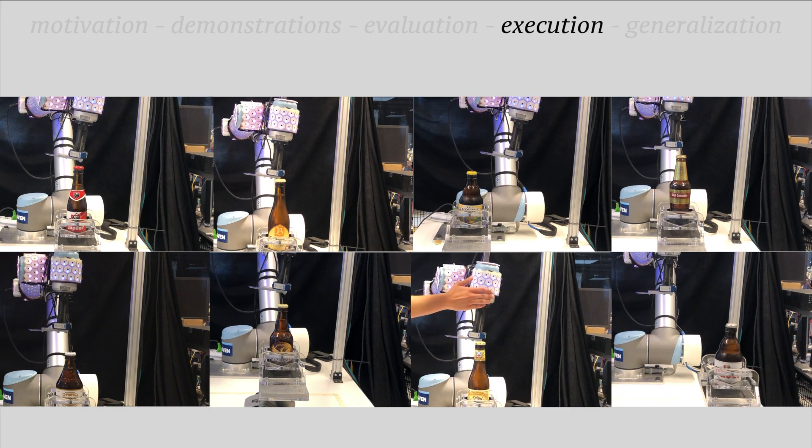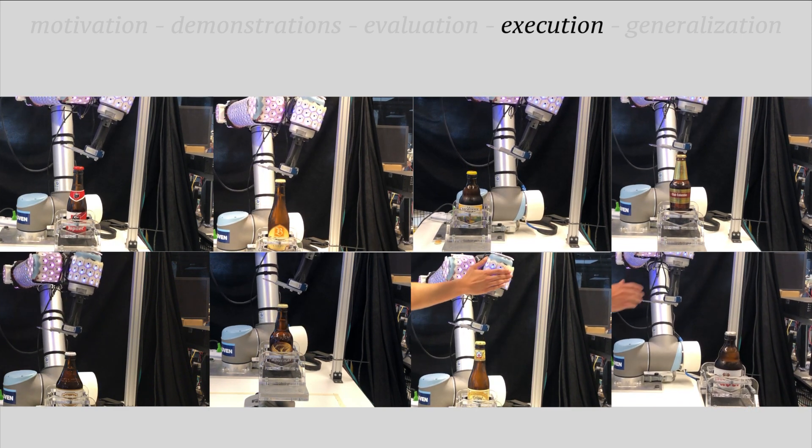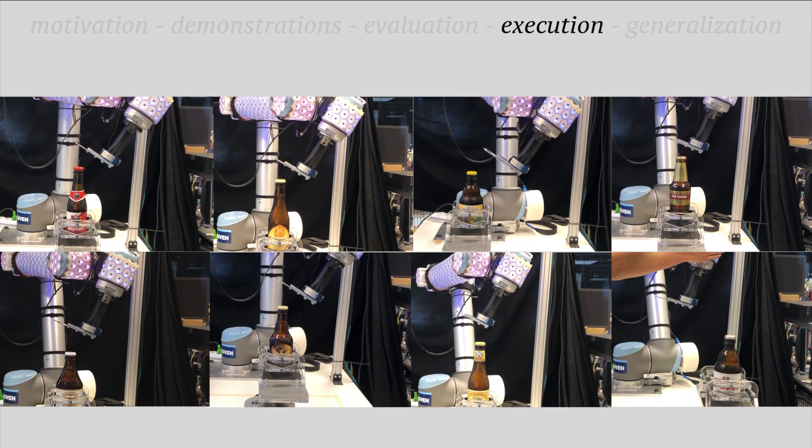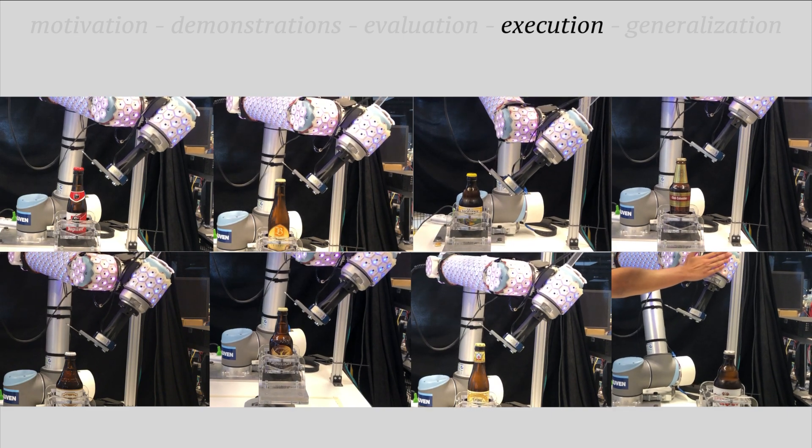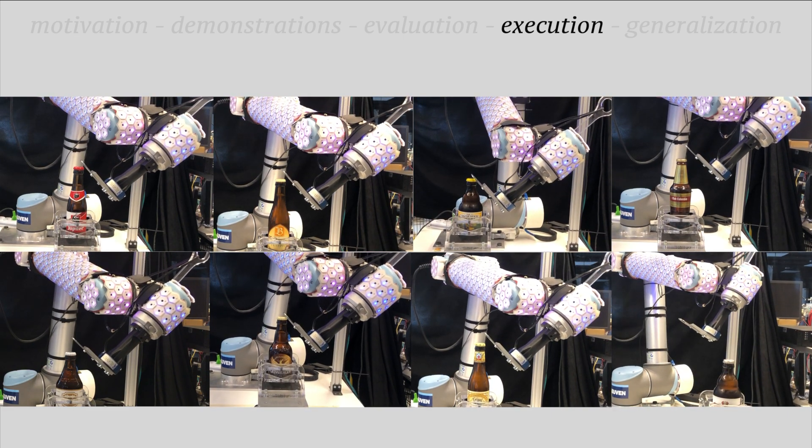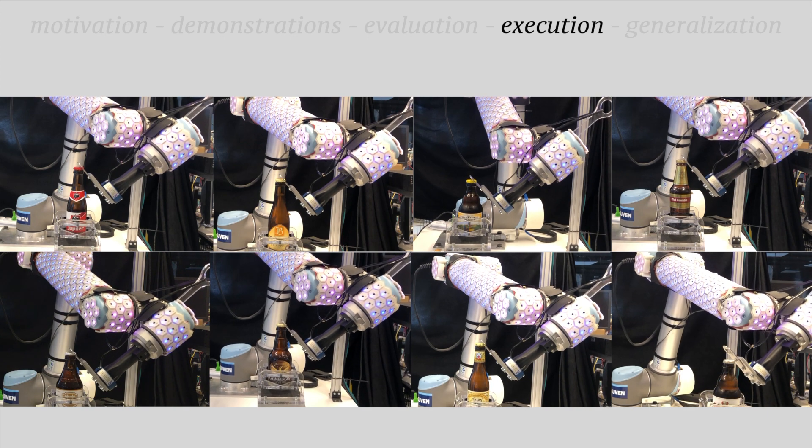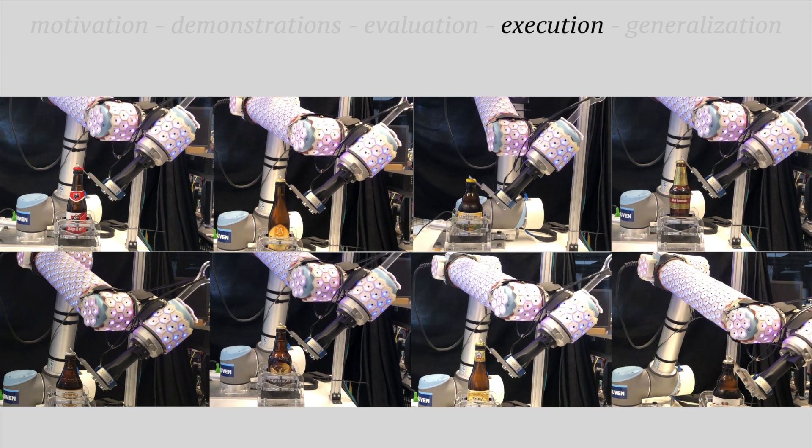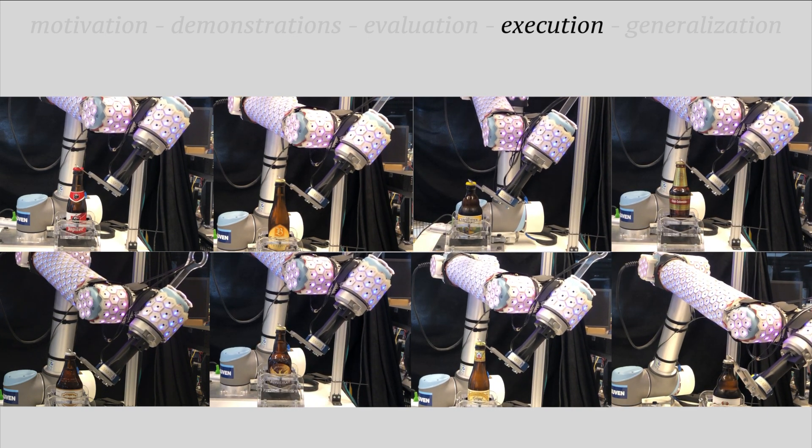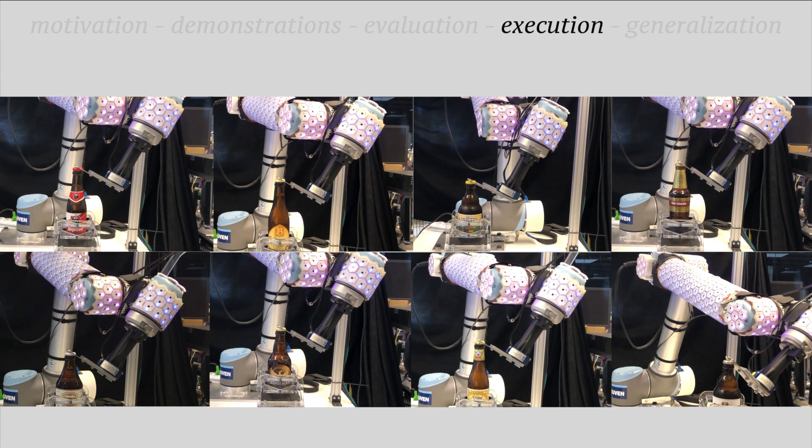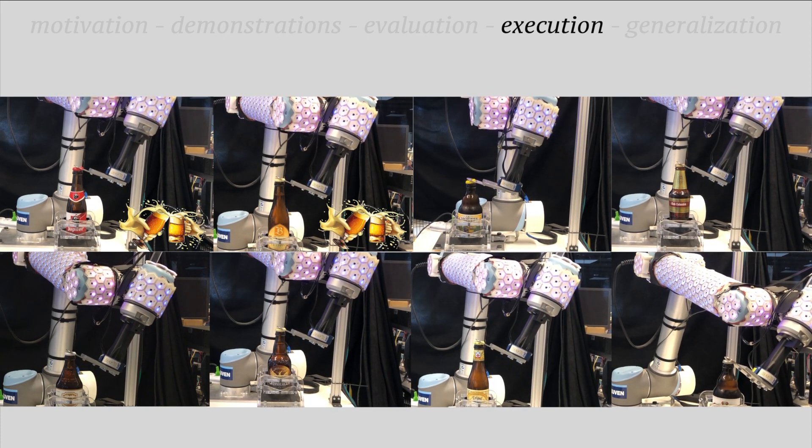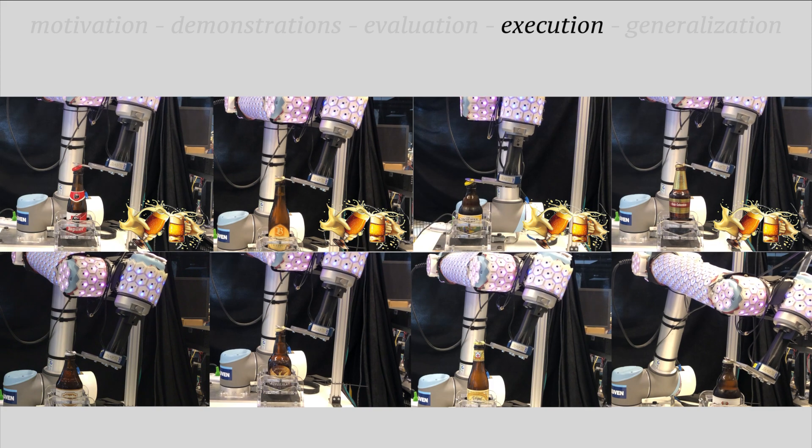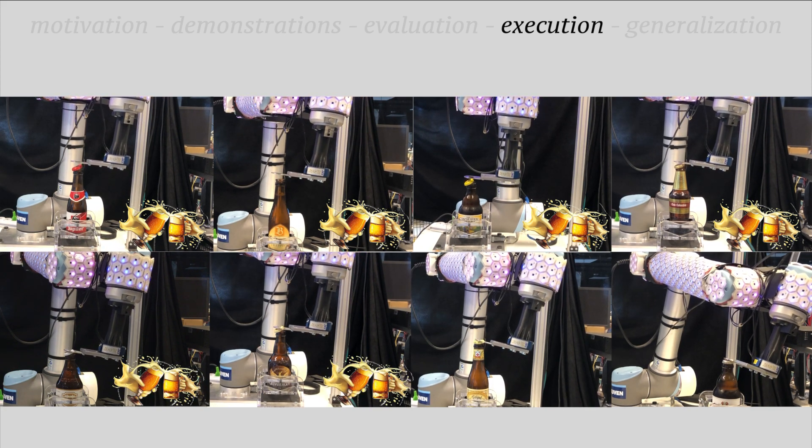During execution we use the easy to program vision system Pickit 3D to obtain the contact point. Our system is able to react to human presence using proximity sensors of an artificial skin. Our framework executes the learned model to open different bottles located in different positions. Belgium has over 1,400 beers and we also tested a Colombian beer.